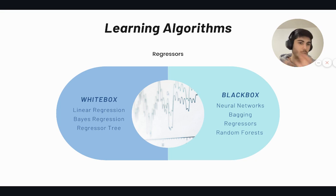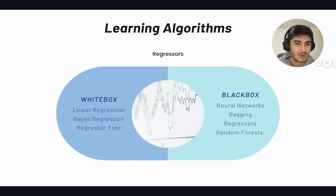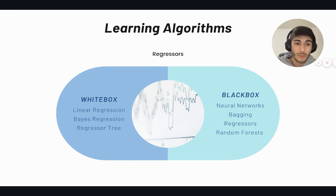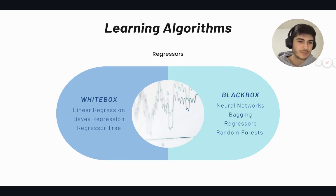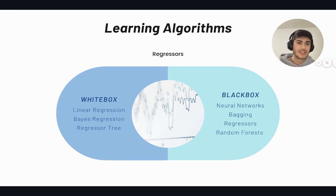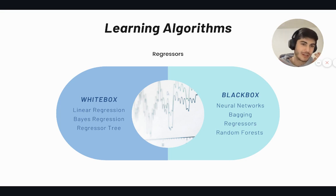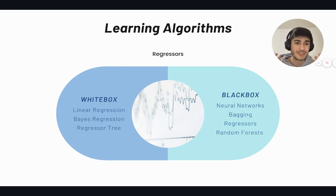White boxes are great for diagnostic analysis of the past but are not as accurate as black boxes. Black boxes include neural networks, deep learning, bagging regressors, random forest, and similar — these produce formulas that cannot be understood by the human mind, so they're not ideal for diagnostic analysis, but they are really accurate for predicting the future. Both white box and black box regressors are used for different purposes and have different objectives.